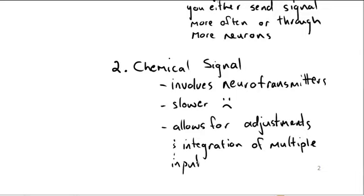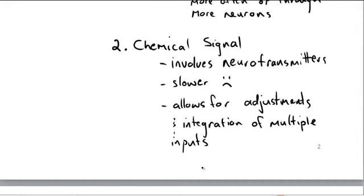So essentially, our nervous system is an electrical pathway with lots of little tiny breaks where the chemical signal can take in input from different neurons and then integrate it and determine the outcome. So we can actually change our mind when we're sending an electrical signal.